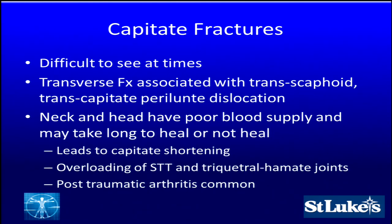Capitate fractures are difficult to see at times. Transverse fractures at the mid-waist of the capitate are usually associated with transcaphoid transcapitate perilunate dislocations. The neck and head have a poor blood supply coming in from a dorsal to proximal direction — it may not heal, or may take very long to heal. This can lead to overall capitate shortening, overloading the scaphotrapezial trapezoidal joint and the triquetral hamate joints, leading to degenerative change and post-traumatic arthritis.